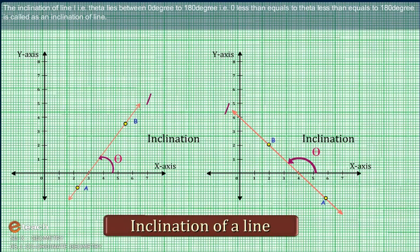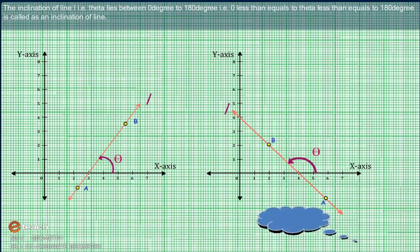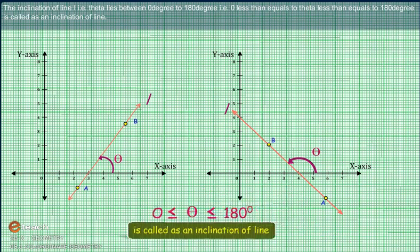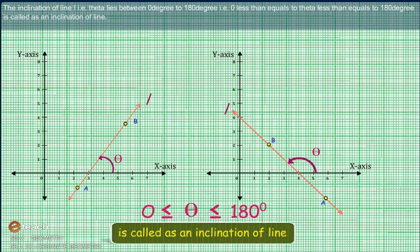The inclination of line L, that is theta, lies between 0 degrees and 180 degrees — i.e., 0 ≤ θ ≤ 180° — and this is called the inclination of the line.